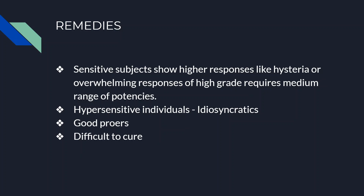Sensitive subjects show higher responses like hysteria or overwhelming responses of a high grade. This requires medium range of potencies, because otherwise aggravation will take place. Hypersensitive individuals — which are idiosyncratic — have high susceptibility, but such cases are given medium range of potencies. Such subjects serve as good provers because on proving they give PQRS symptoms.